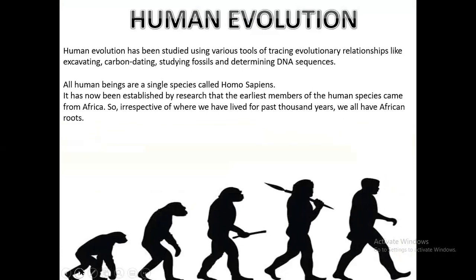Human evolution has been studied using various tools for tracing evolutionary relationships, like excavating, carbon dating, studying fossils, and determining DNA sequences. All human beings are a single species called Homo sapiens. It has now been established by research that the earliest members of Homo sapiens came from Africa. So, irrespective of where we have lived for the past thousands of years, we all have African roots.